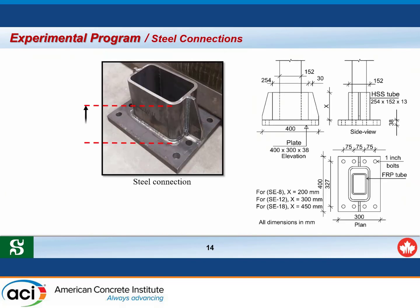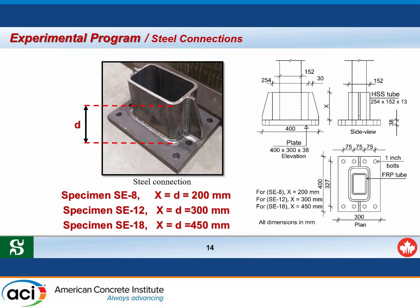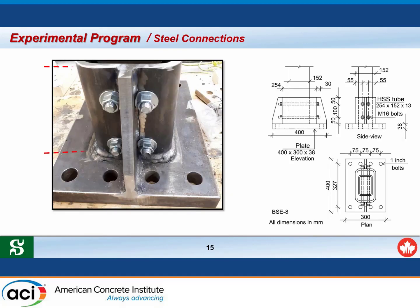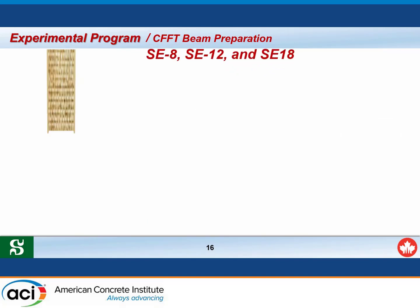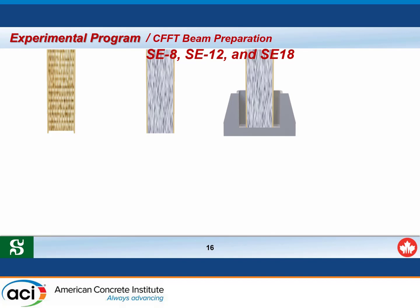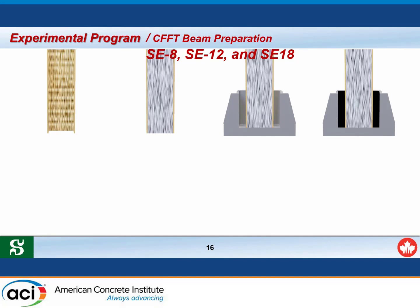The details for the first three specimens show the HSS section and steel plate, four anchors on each side, and stiffeners supporting the flange of the HSS section. For the fourth bolted specimen, the anchors pass through both the steel connection and the CFFT beam. The preparation of the CFFT beam involves filling the FRP tube with concrete, inserting the CFFT into the steel connection, and then filling the gap between the CFFT beam and the steel connection with epoxy grout.